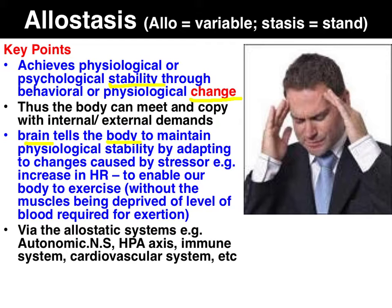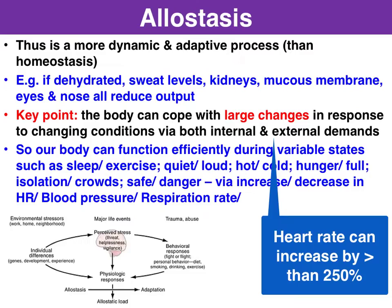This is achieved by a variety of allostatic systems: the autonomic nervous system, HPA axis, immune system, cardiovascular systems, etc.